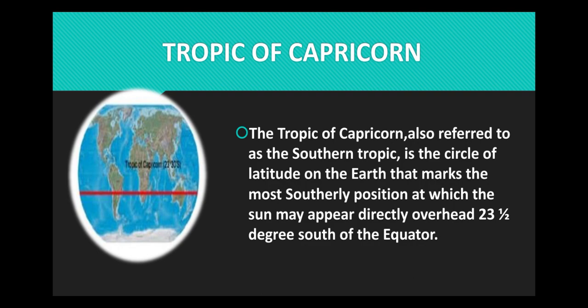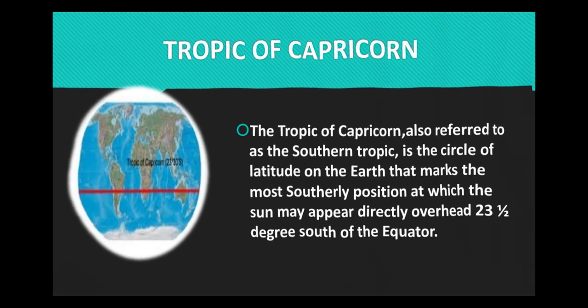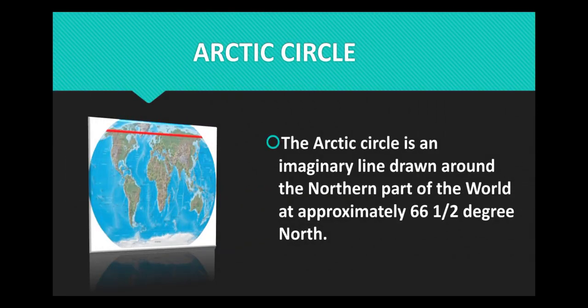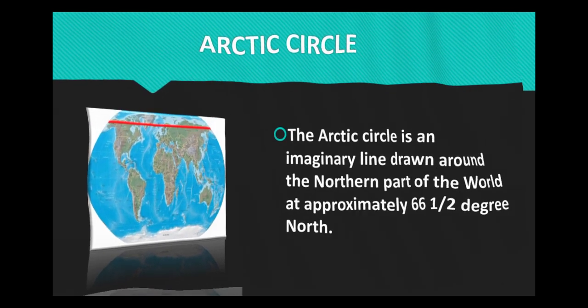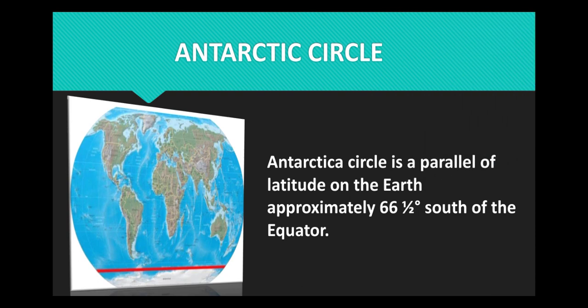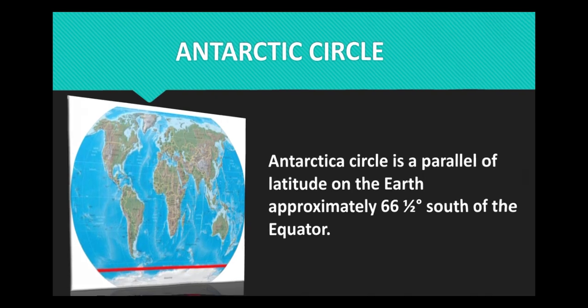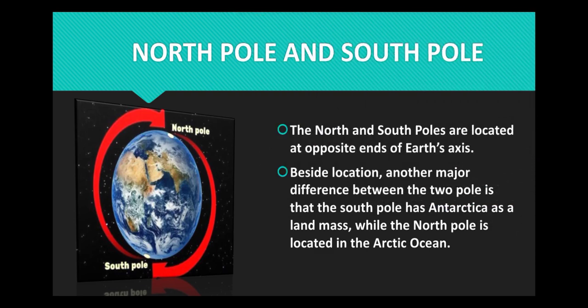Tropic of Capricorn is overhead 23 and a half degree south of the equator. Arctic Circle is an imaginary line drawn around the northern part of the world at approximately 66 and a half degree north. Antarctic Circle is a parallel of latitude on the Earth approximately 66 and a half degree south of the equator.